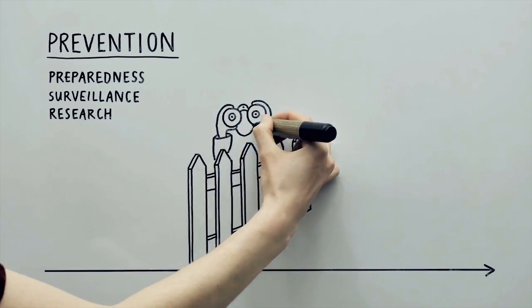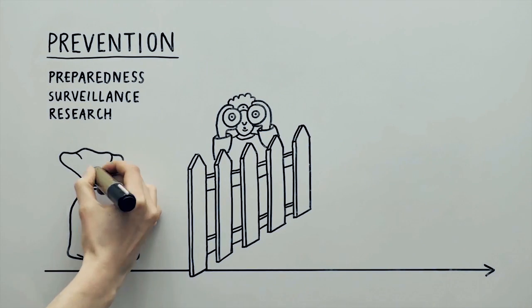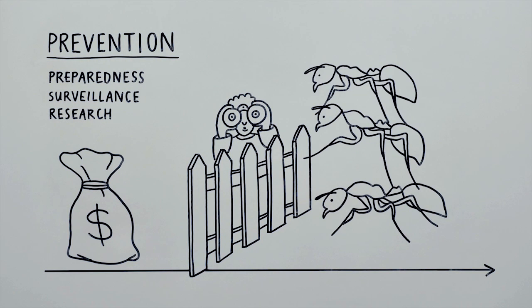It's much more cost effective to prevent threats like myrtle rust, red imported fire ants and foot and mouth disease than to manage them once they've entered the state.